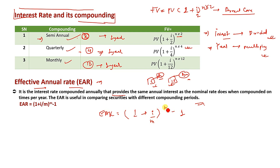The compounding periods m can be 2, 4, etc. Effective annual rate is used in comparing securities. If you want to compare rates, you can use the effective annual rate.